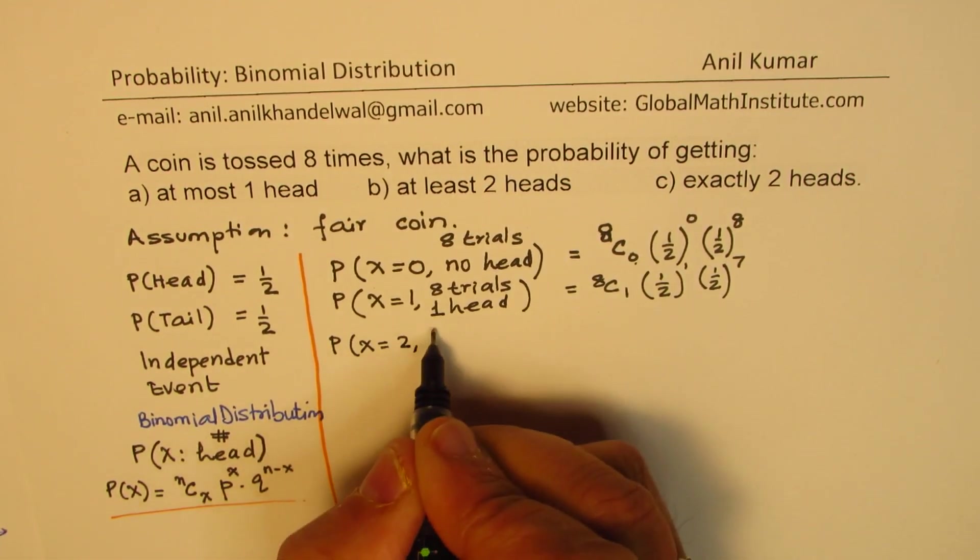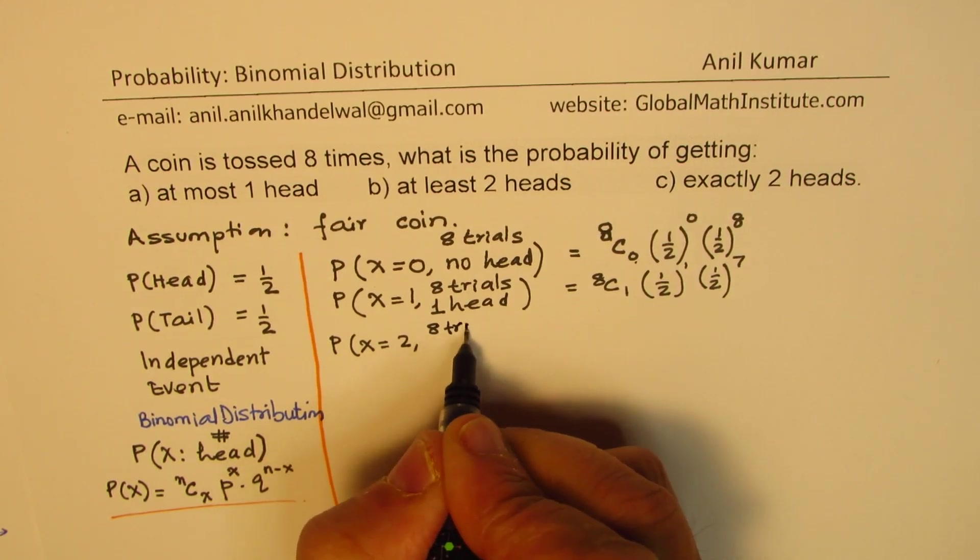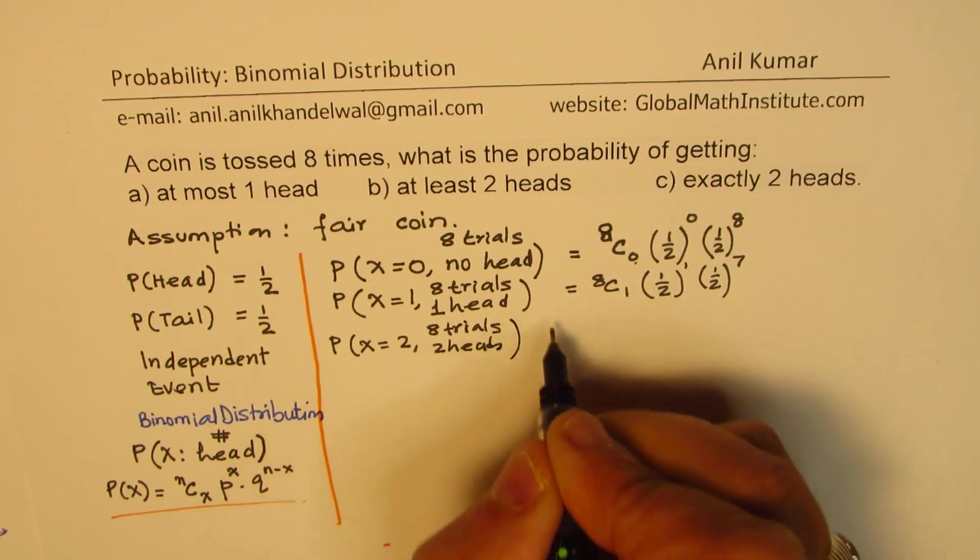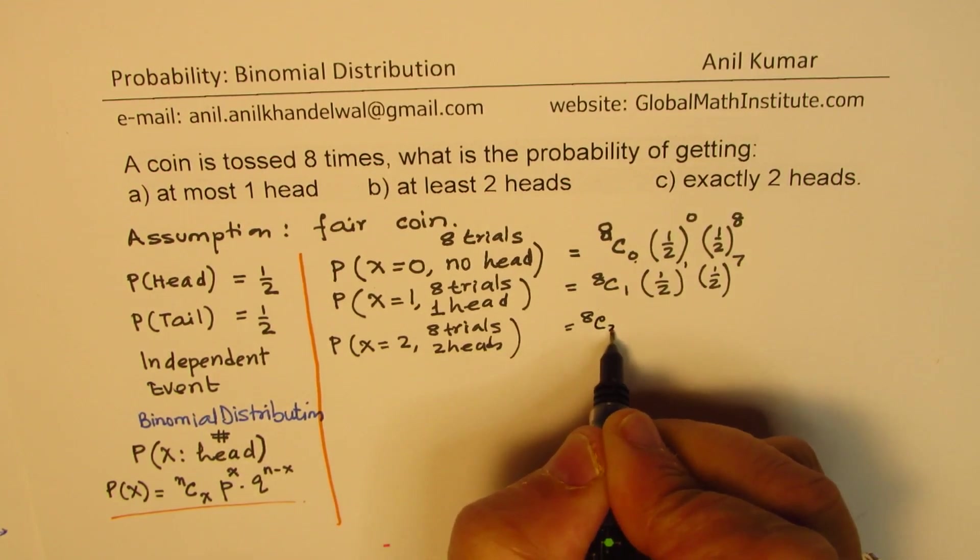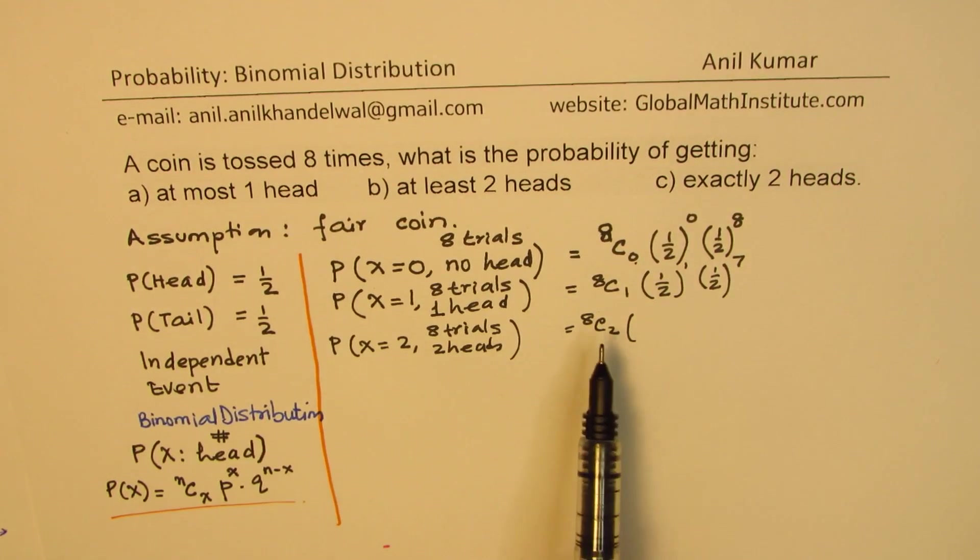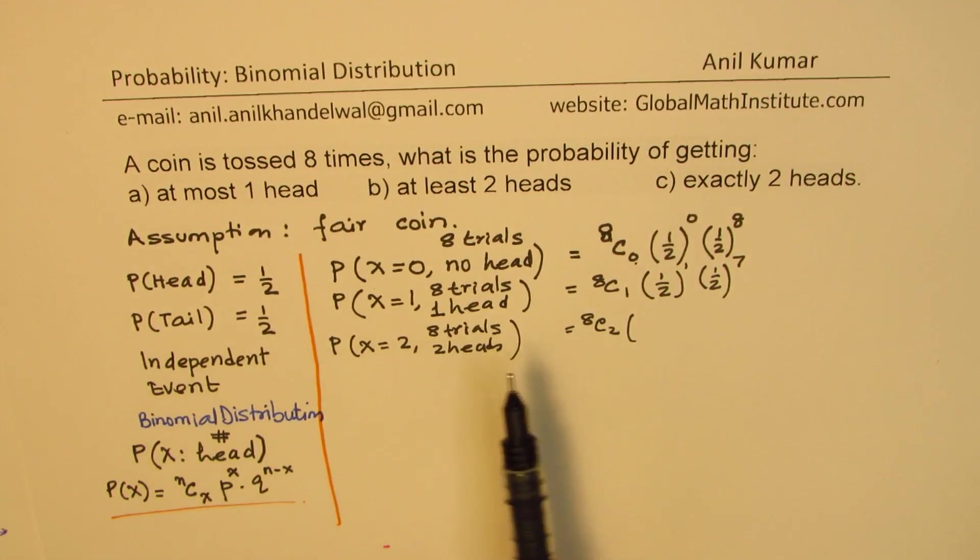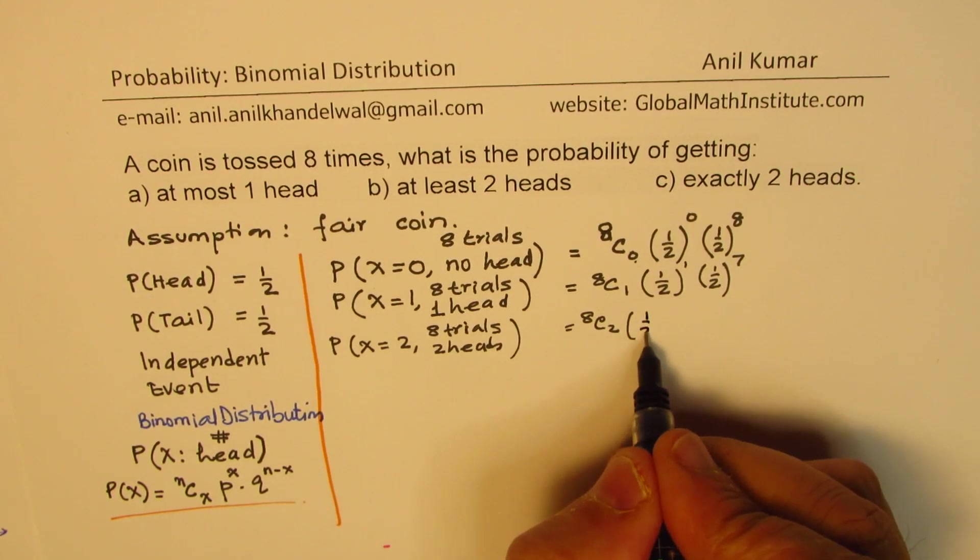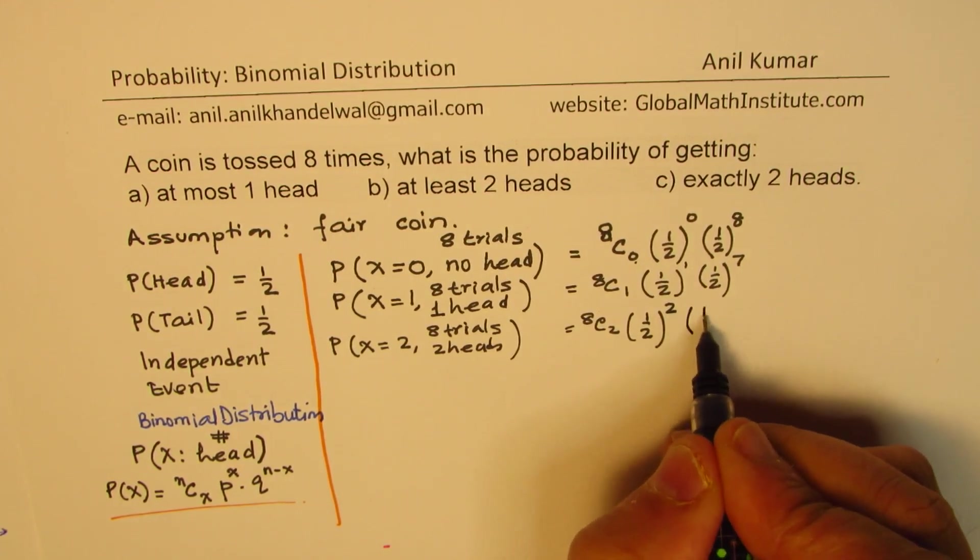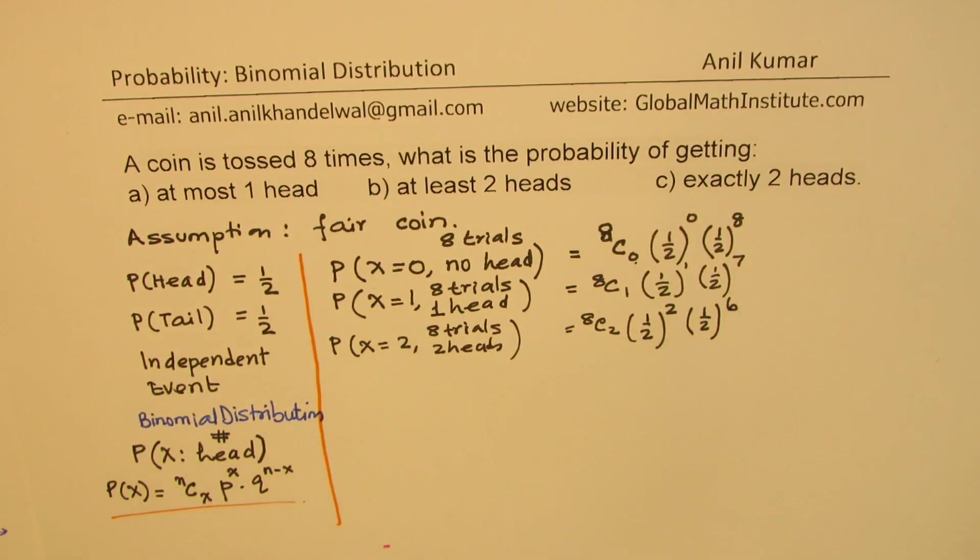Let's also see what is the probability of getting two heads. So eight trials, two heads. So out of eight, we have two heads. They could be in any position. That is what we mean when we multiply by 8C2. So in eight trials, we could have head first, second, third, fourth, or any different position. So those combinations. And the probability of getting head is half. Half, it comes twice, and rest of the time, we get tail.